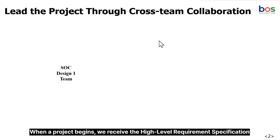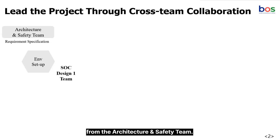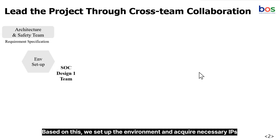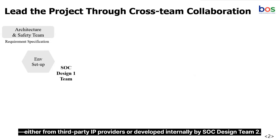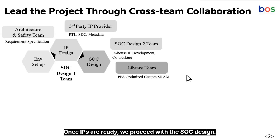When a project begins, we receive the high-level requirement specification from the architecture and safety team. Based on this, we set up the environment and acquire the necessary IPs, either from third-party IP providers or developed internally by SOC Design Team 2. Once IPs are ready, we proceed to SOC Design.